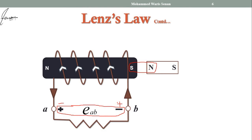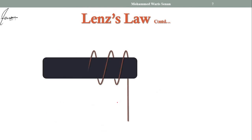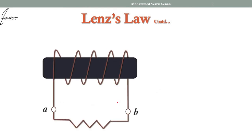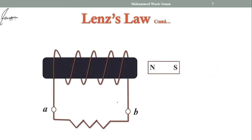Since the polarity we assumed is opposite to what Lenz's law requires, the true polarity should be reversed. The induced EMF E_AB in this case will have a negative sign. Now let us take a third case: wrapping the coil on an iron core and moving a bar magnet towards it, but now reversing the polarity of E_AB so that A is taken as negative and B as the positive terminal.